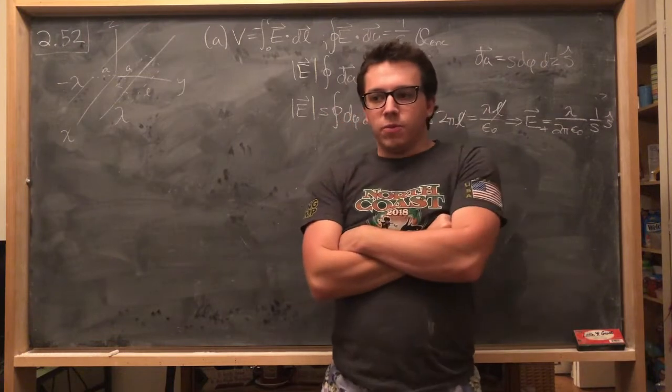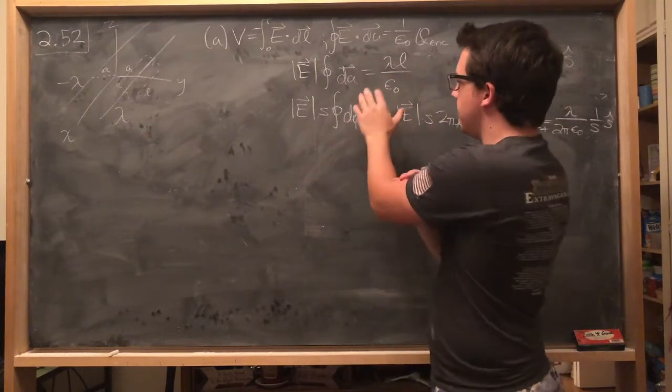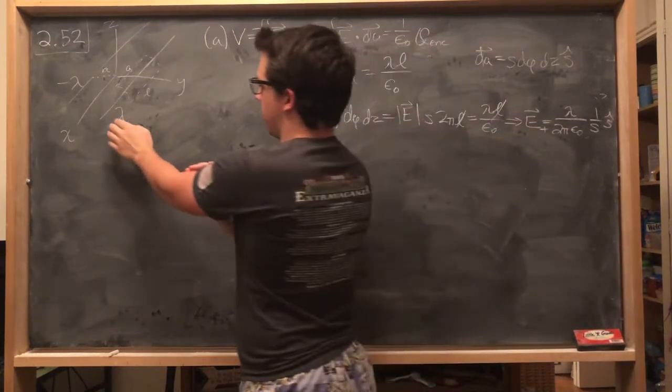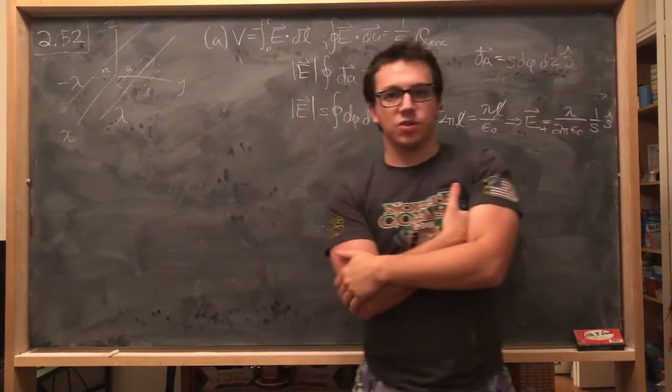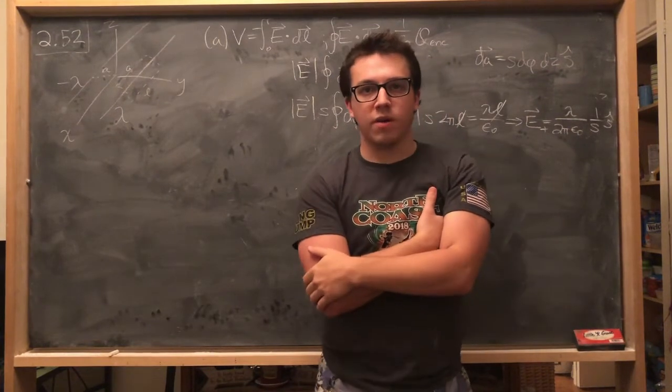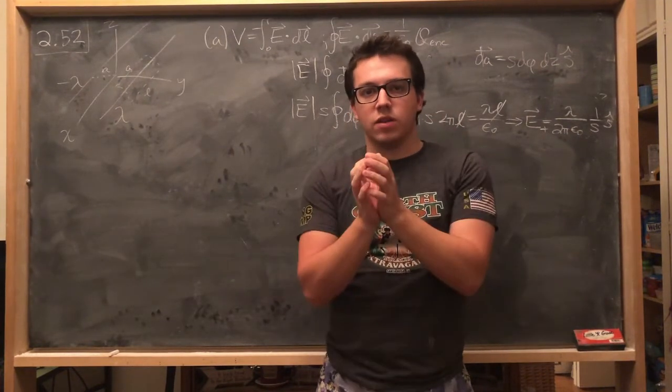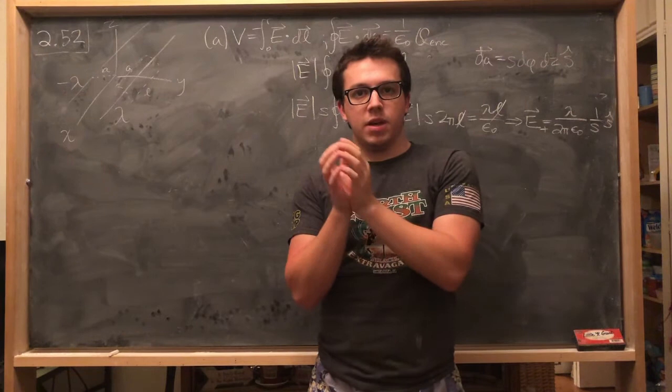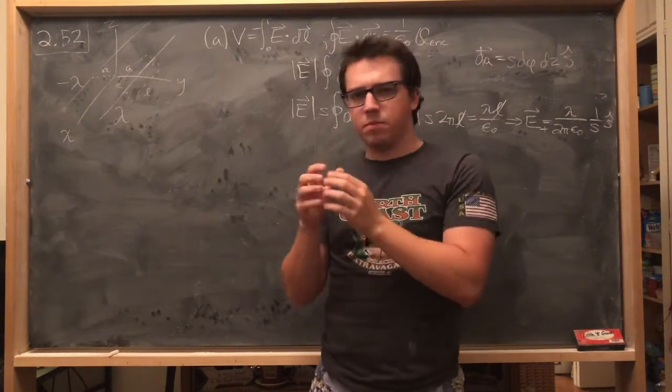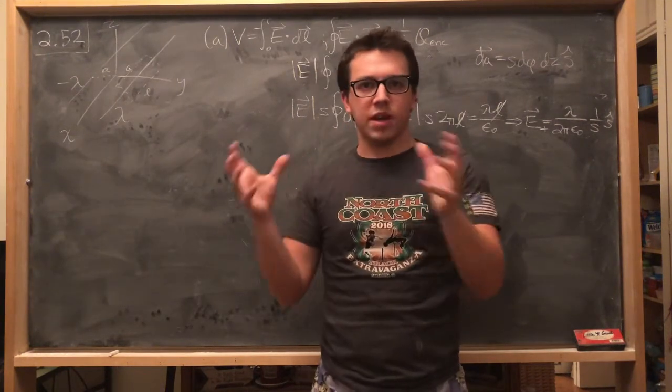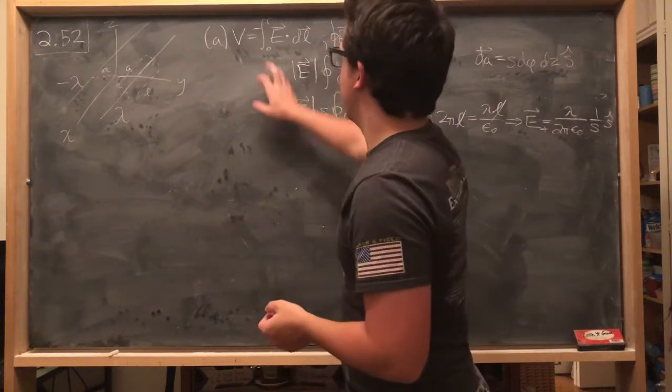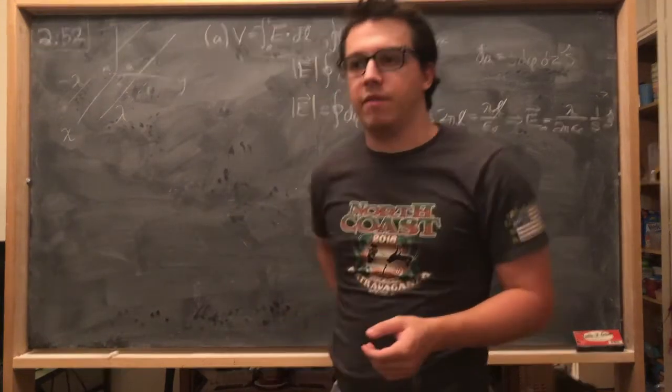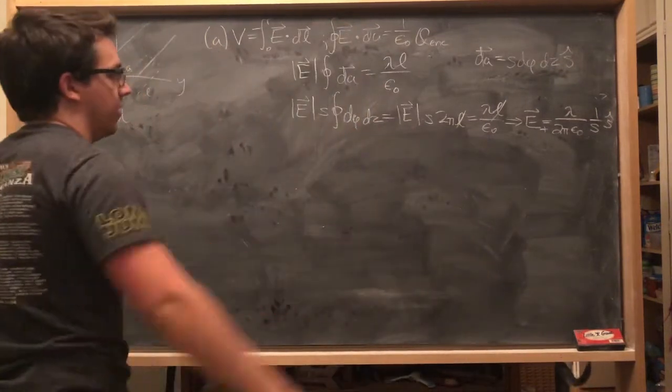So if we can formulate both of these potentials, the potential for the positive lambda and the potential for the negative lambda, and as long as we're calculating that potential from the same reference point, then we could just add the two together, get the total potential for the two of them, and then convert that into a Cartesian coordinate system so that we have it in terms of x, y, and z. And so let's do that.